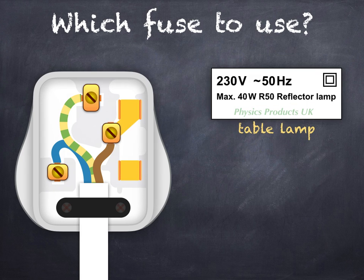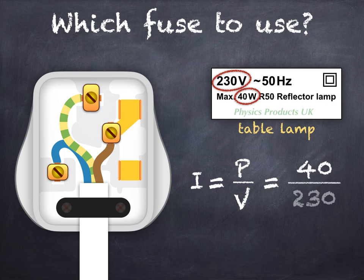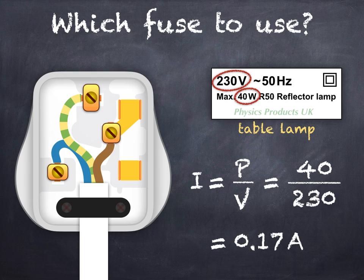Here's the first example. This is the ratings plate from a table lamp. Remember we're using the equation I is equal to P divided by V to calculate the current in the device. P is power, which in this case is 40 watts. And V is the voltage, 230 volts. That will be the same for all three devices. That's the value of the mains voltage in the UK. Substituting these values into the equation gives a current of 0.17 amps. So the table lamp should be fitted with a 3 amp fuse.